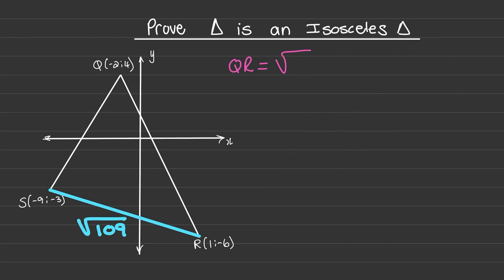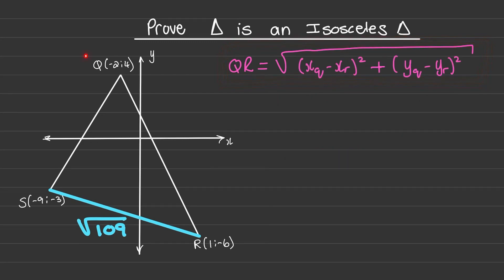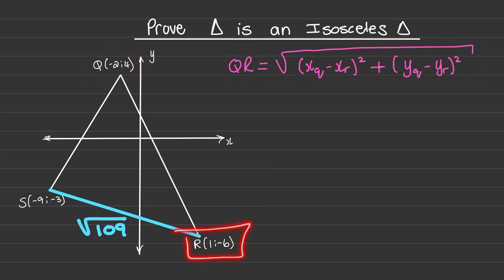Now let's use the distance formula again to find the length of line QR. I'll use the distance formula, but now I'll only focus on the coordinates of Q and R.